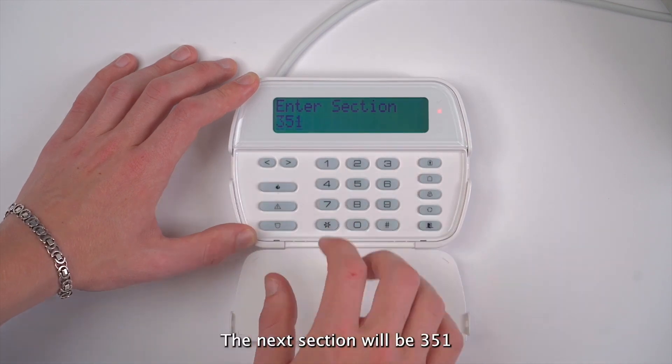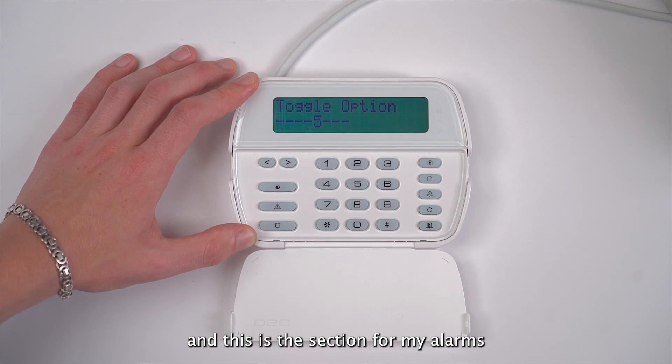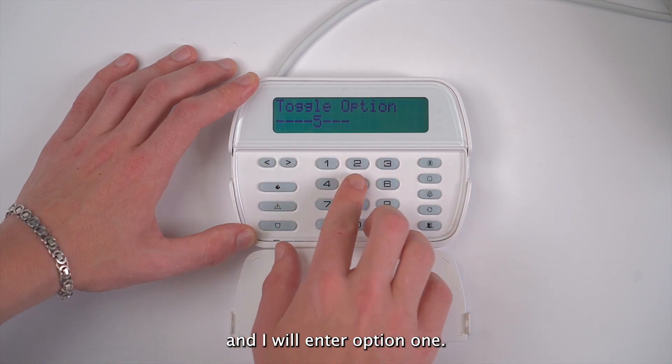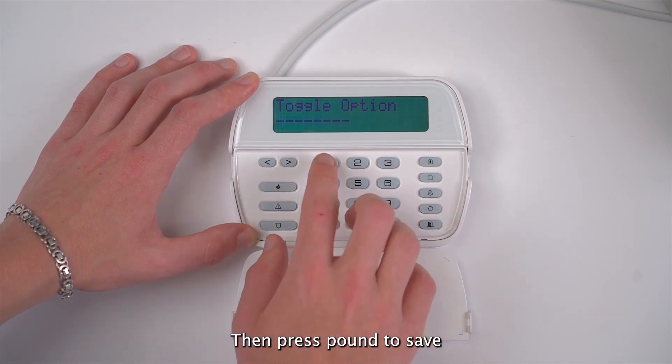The next section will be 351, and this is the section for my alarms and restorers report codes. I will take option 5 away from this section and I will enter option 1, then press pound to save.